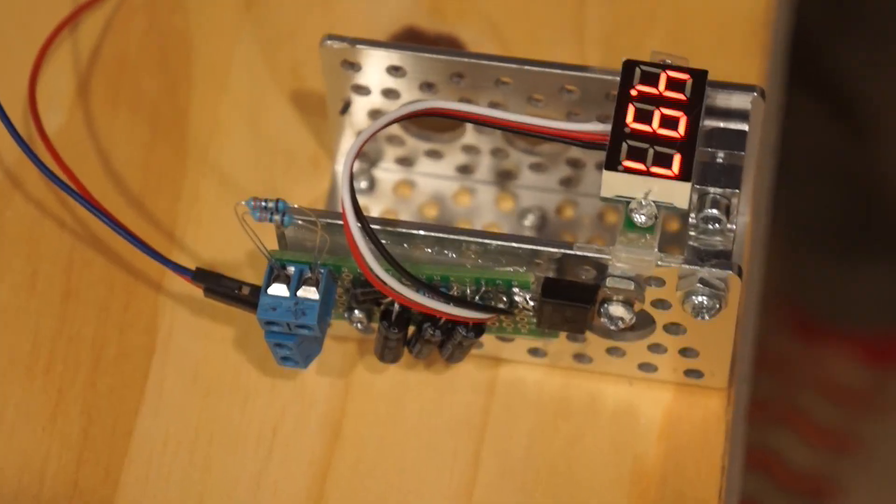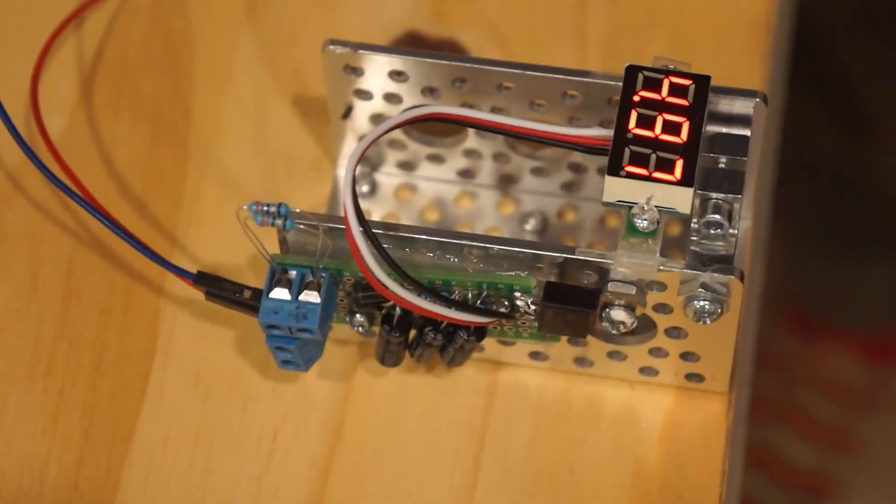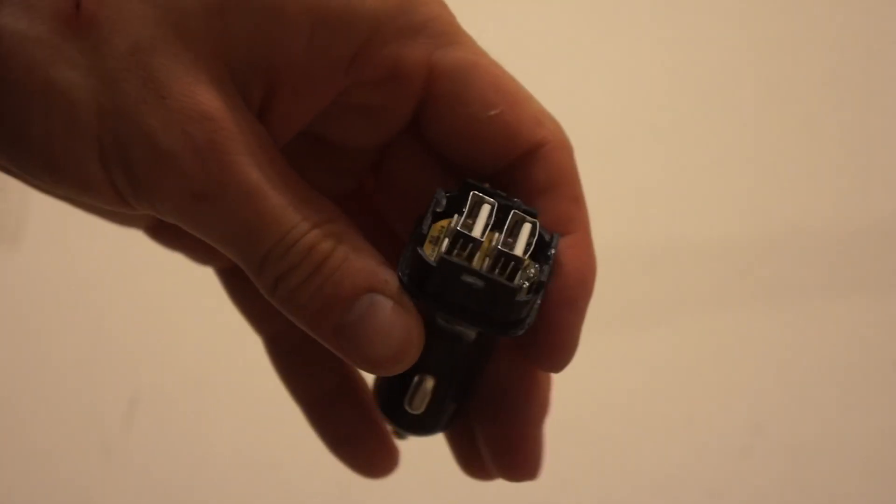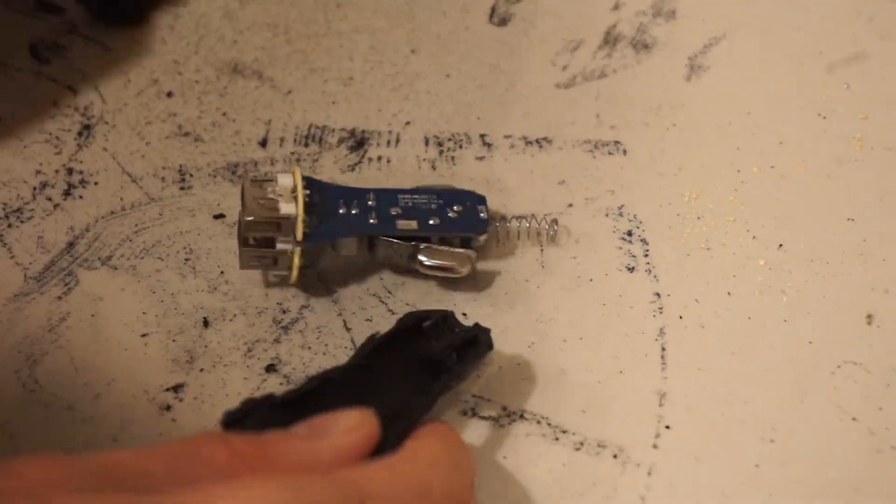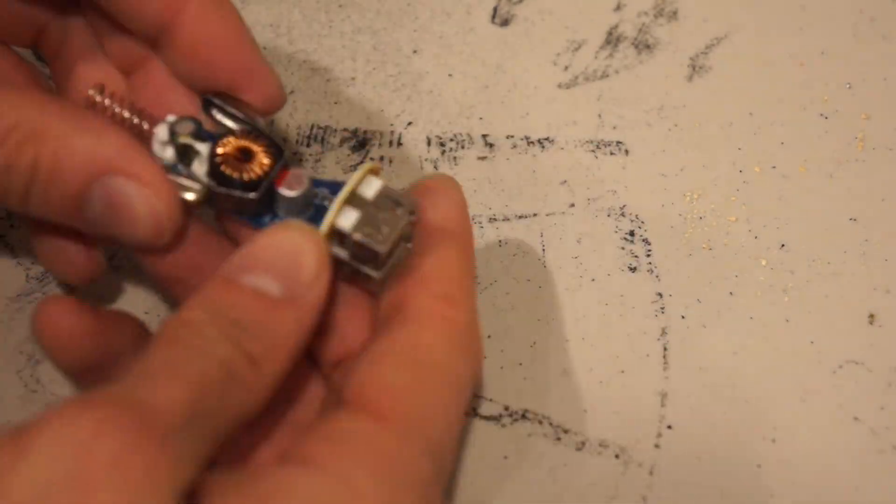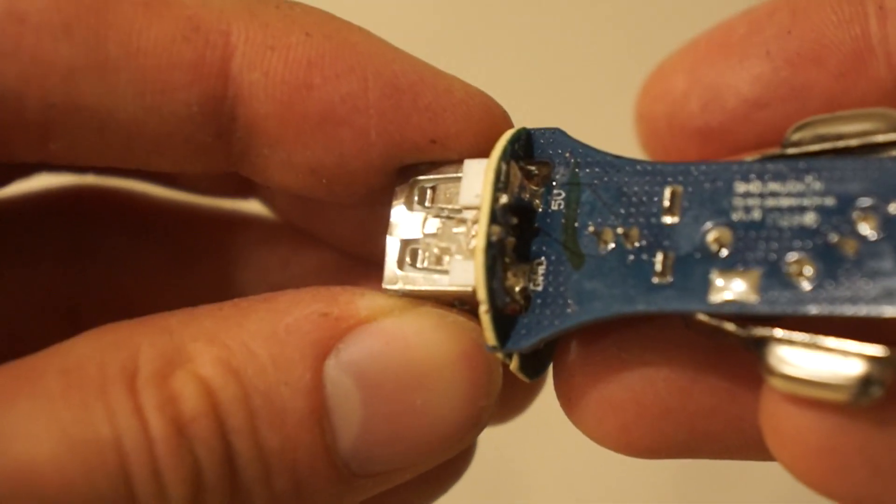Now that we have a 5 volt output, we need a way to connect a charging cable. We could just cut one open and attach it directly, but I'd prefer to have a USB connection. I'm just going to open up this car charger. You can get them for a few dollars. They're actually super useful as cheap 12 volt to 5 volt voltage converters, but for now we'll just attach our 5 volts to the 5 volt input of the USB output.